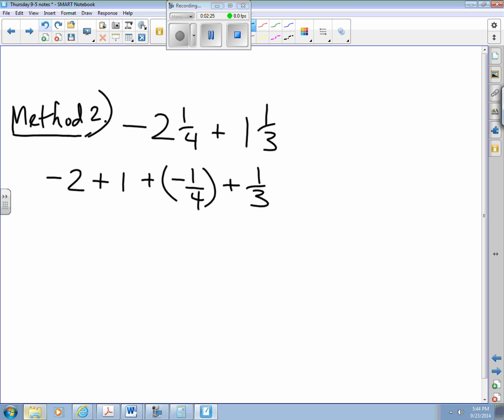From there, I add the integer part: negative 2 plus 1 is negative 1. And this part I still need a common denominator of 12, so that'd be negative 3 twelfths and that would be 4 twelfths. Try to keep up to me, and look what happens this time. See, this part of the answer is negative 1, but this part of the answer is actually positive one twelfth.